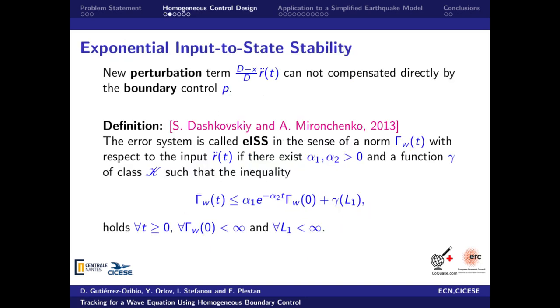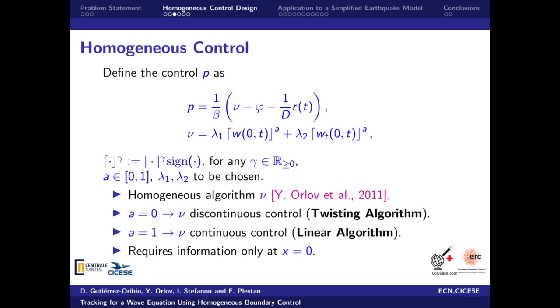This perturbation term is not matched to the boundary control. Therefore, it cannot be directly compensated by the input and a common stability result won't be obtained in this work. In exchange, an exponential ISS result for PDE system will be obtained where the tracking error is bounded by a norm close to the origin. The ultimate bound will depend on a K-class function of the input R double dot.